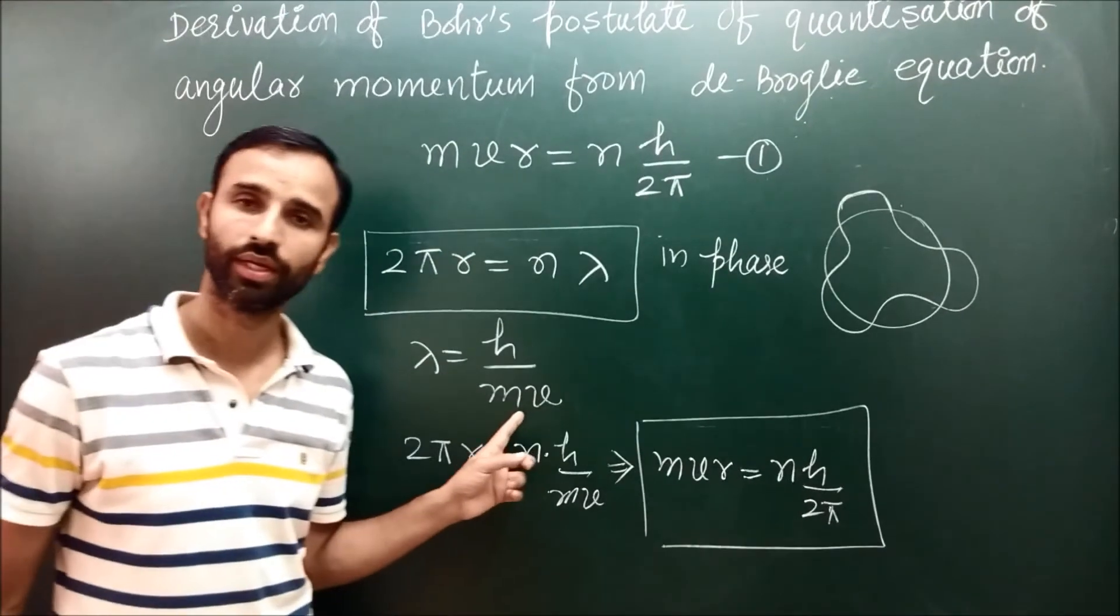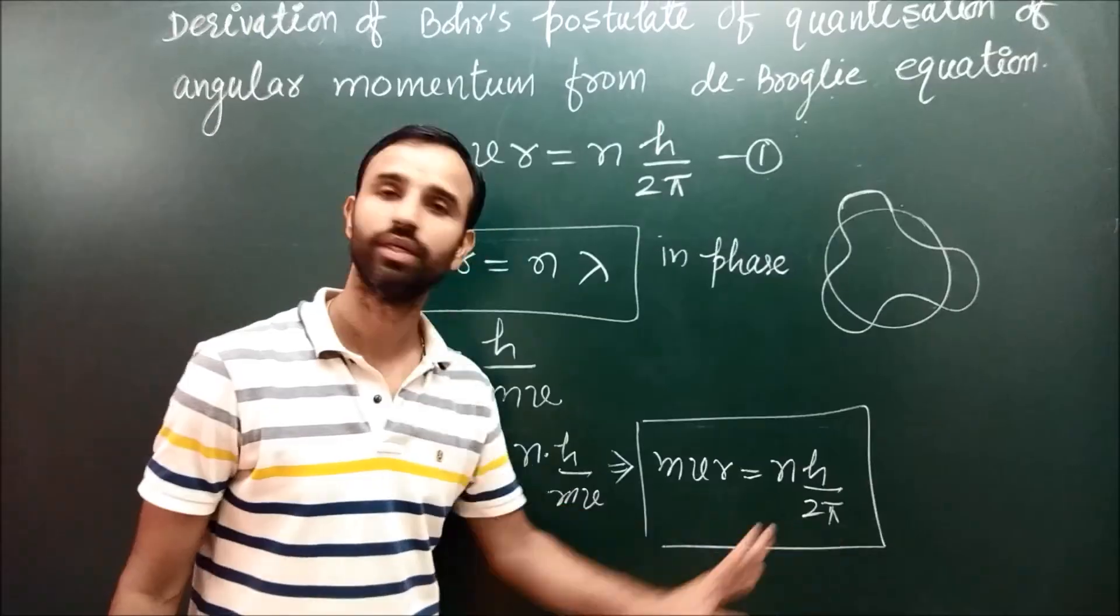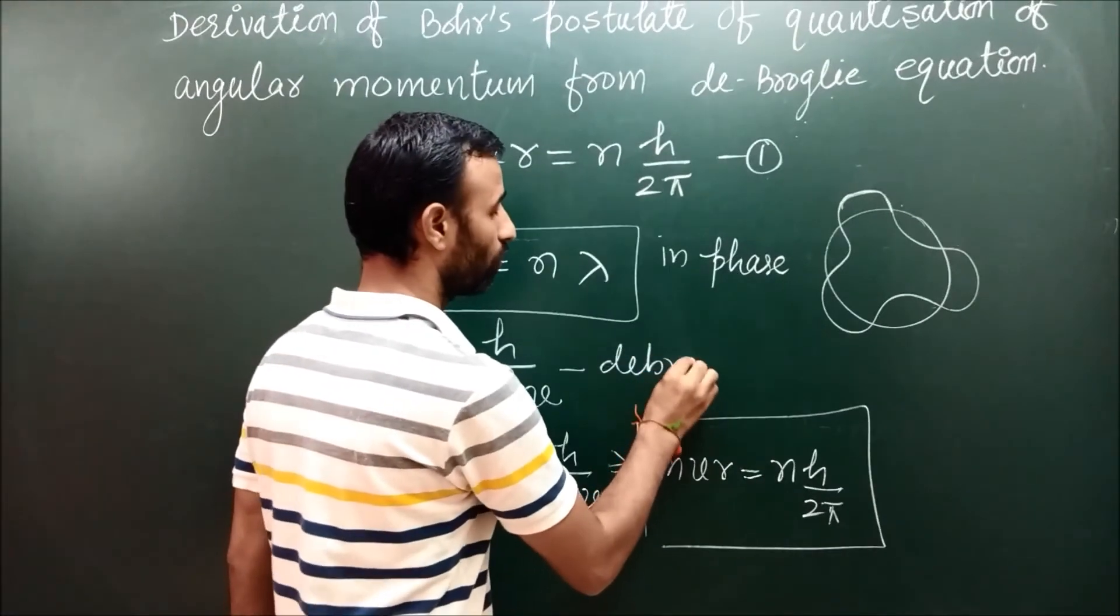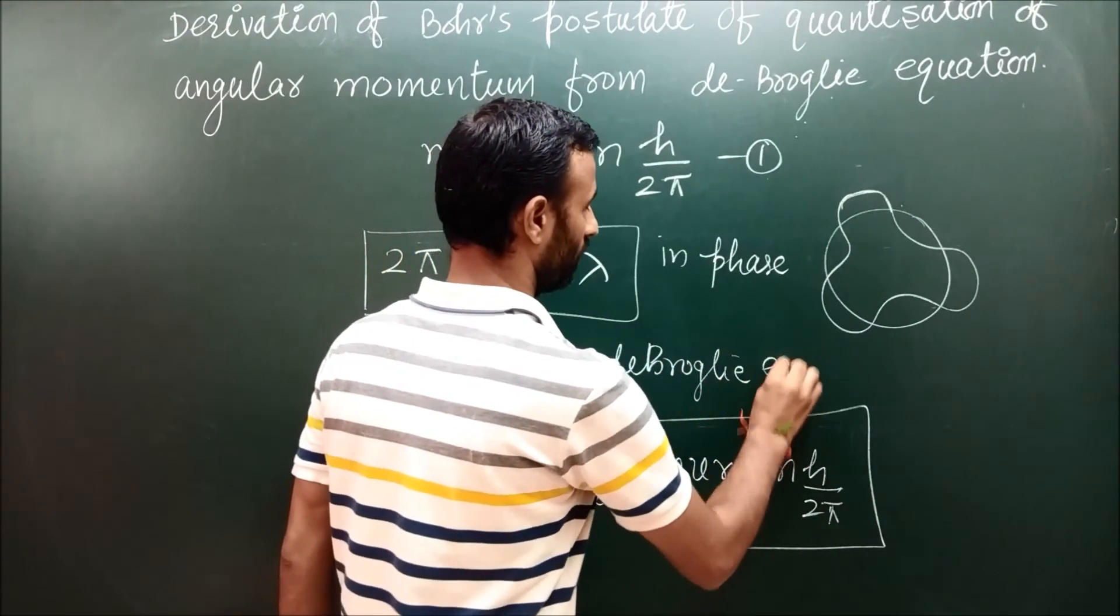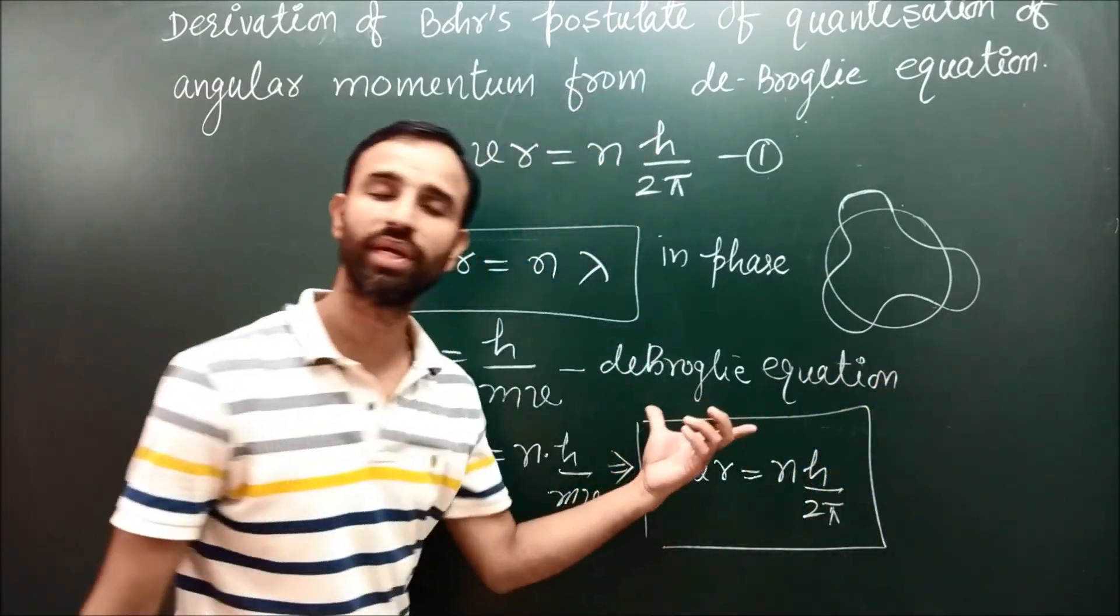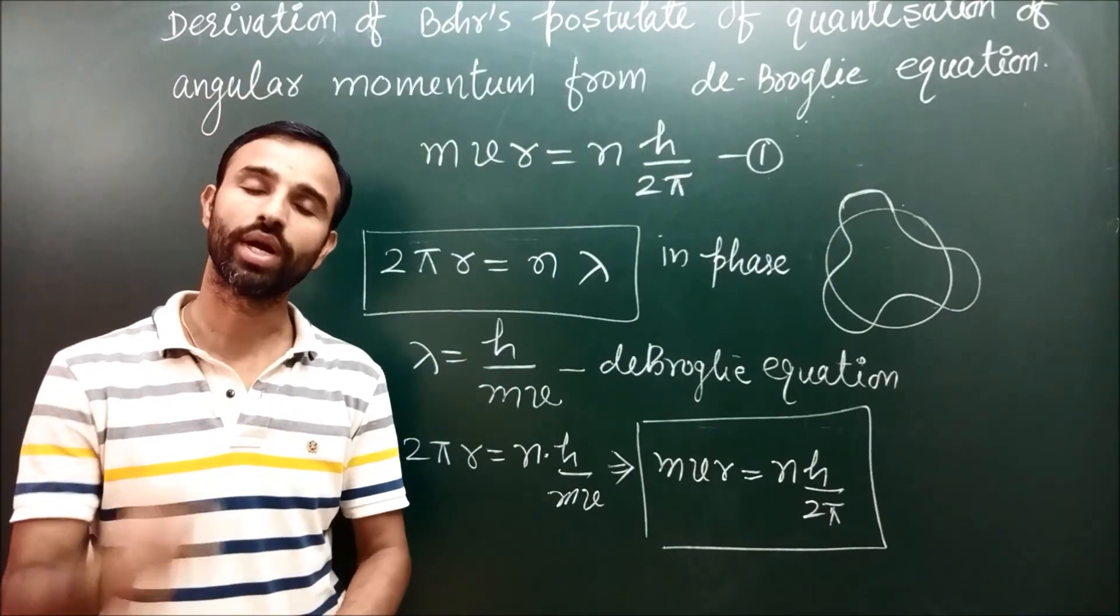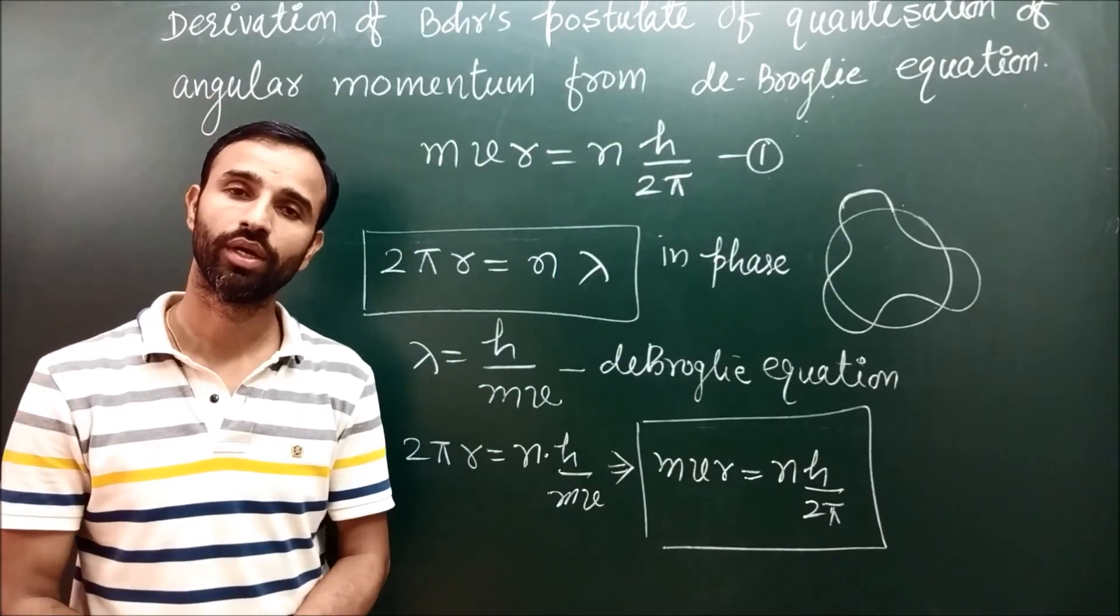By using de Broglie equation, we can derive the relation. De Broglie equation is in agreement with Bohr's postulate of quantization of angular momentum.